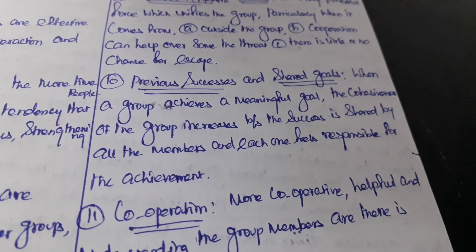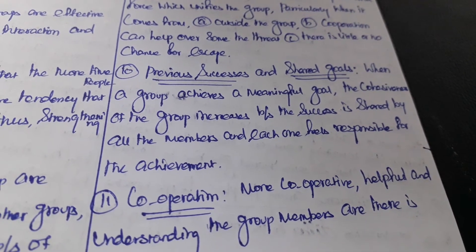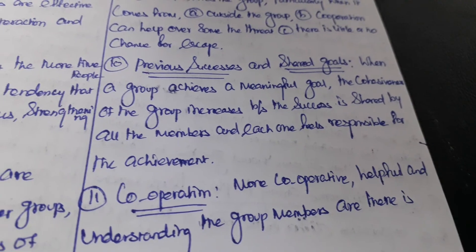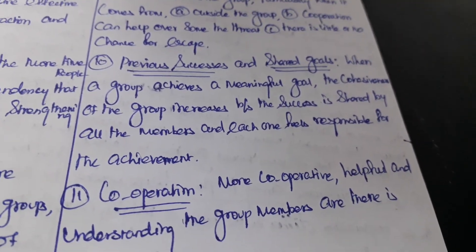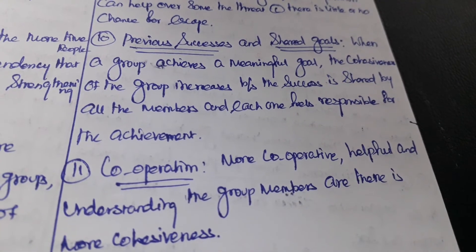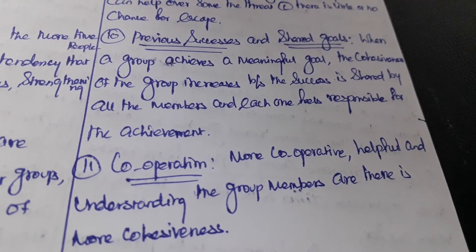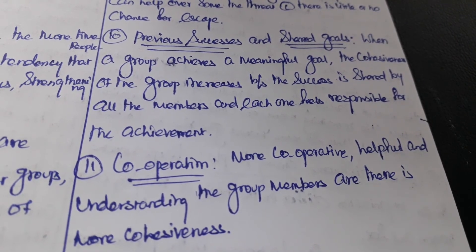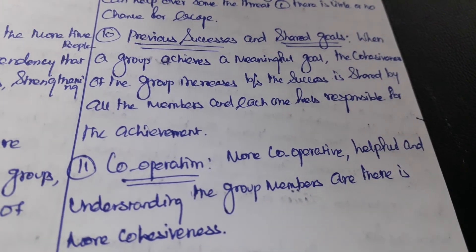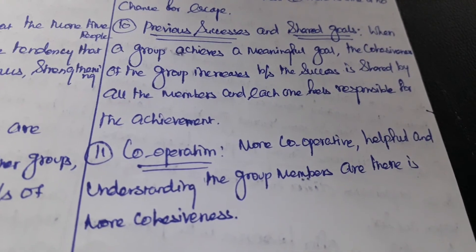The next factor is previous successes and shared goals. When a group achieves a meaningful goal, the cohesiveness of the group increases because the success is shared by all the members and each one feels responsible for the achievement. If the group has previously achieved success, they will strive to maintain that success in future periods, resulting in greater group cohesiveness, as members feel more responsible for sustaining it.